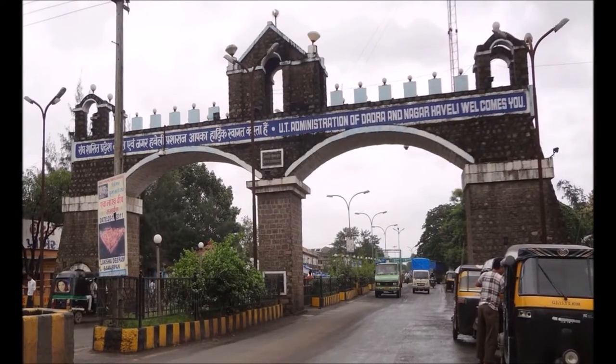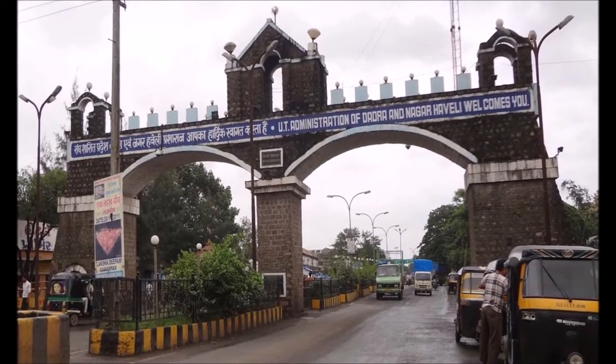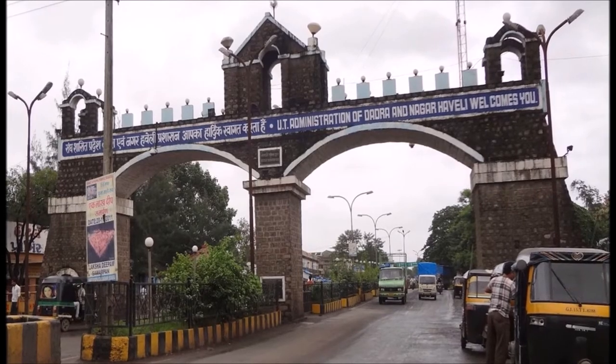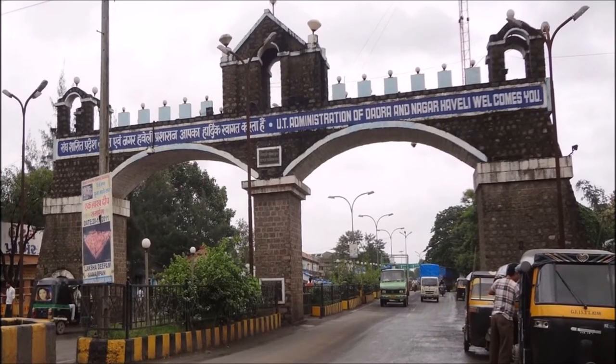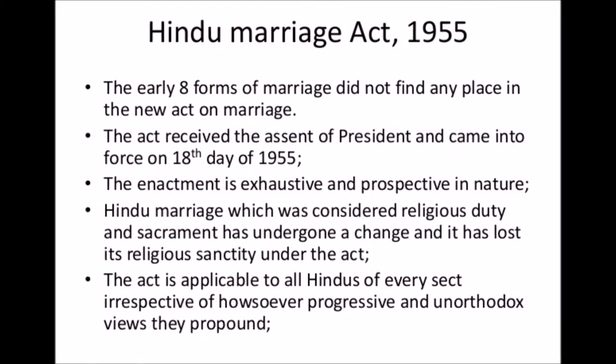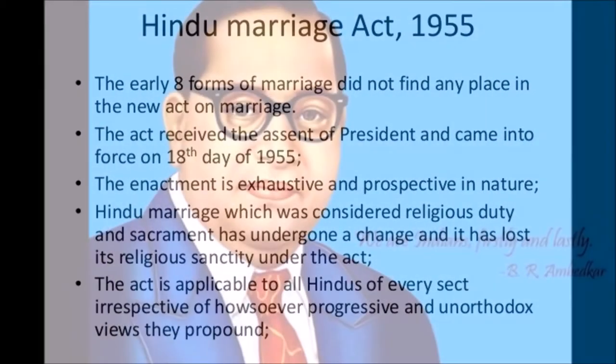1954: The Indian annexation of Dadra and Nagar Haveli occurred. 1955: The Imperial Bank of India was transformed into the State Bank of India, and the Hindu Marriage Act was also enacted.